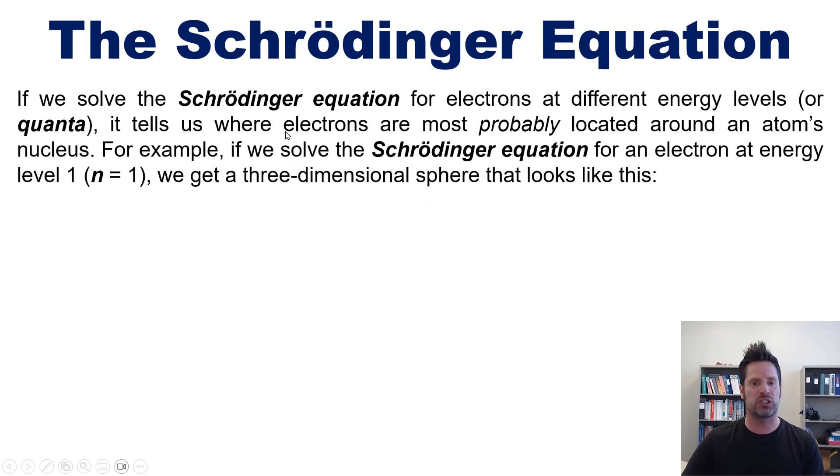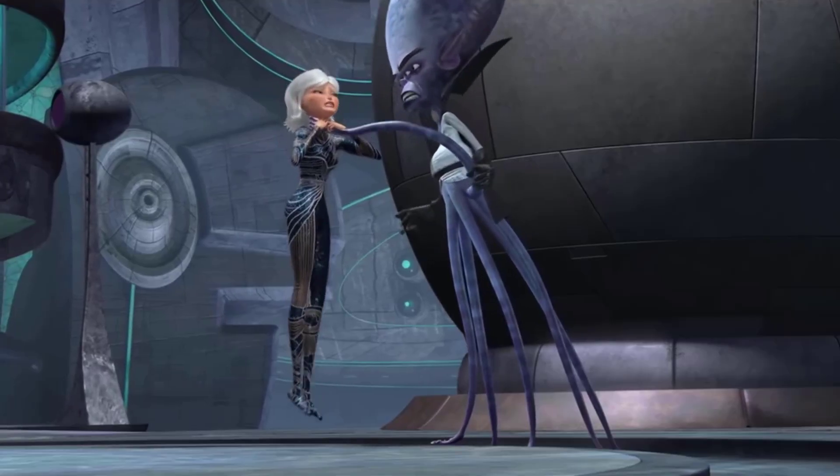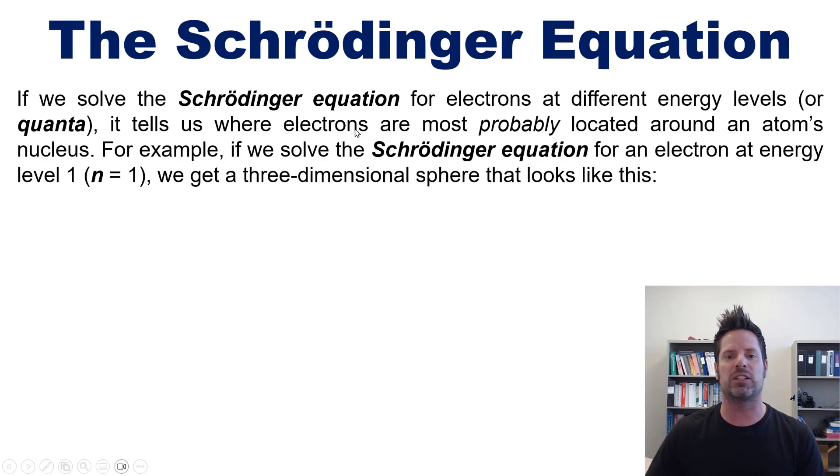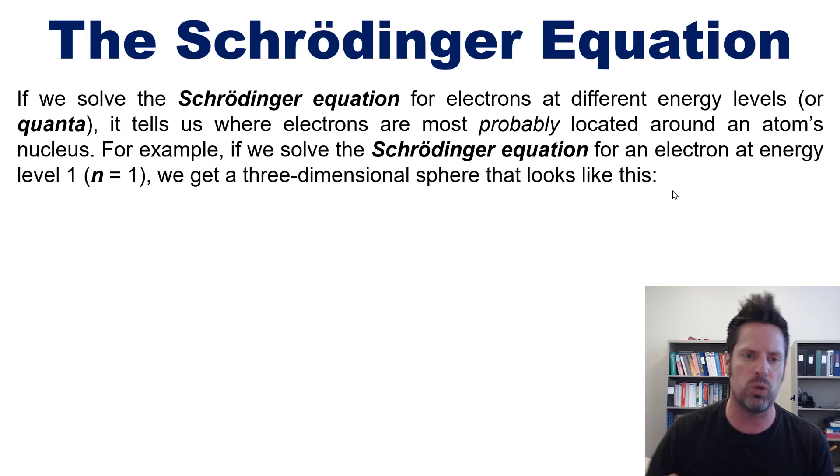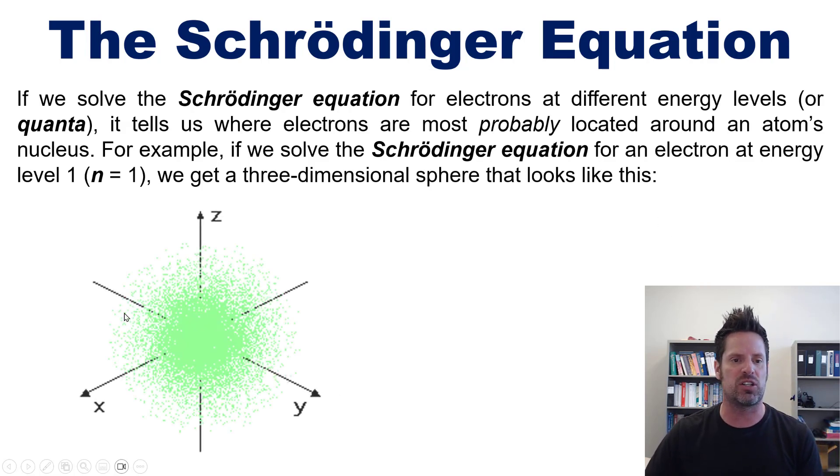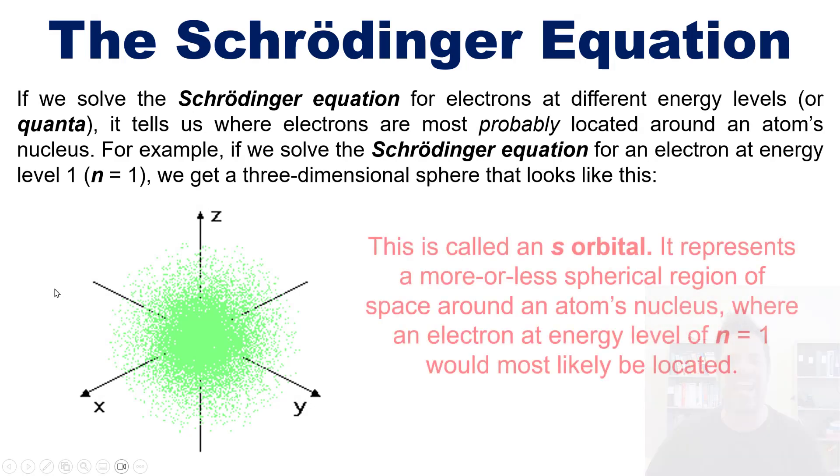The point is, if we solve the Schrödinger equation for electrons at different energy levels, or quanta, it tells us where electrons are most probably, that is, statistically most probable, to be located around an atom's nucleus. For example, if we solve the Schrödinger equation for an electron at energy level one, that is n equals one, we get a three-dimensional spherish shape around the atom's nucleus that looks like this. Now, this region of space is called an s orbital. It represents a more or less spherical region of space around an atom's nucleus where an electron at energy level of n equals one would be most likely, statistically, to be located.